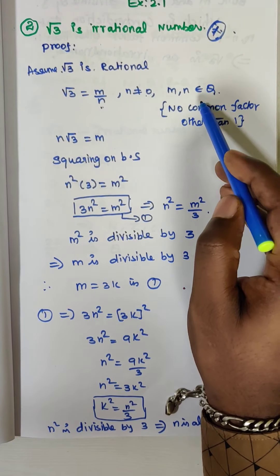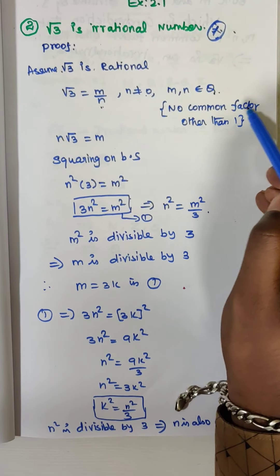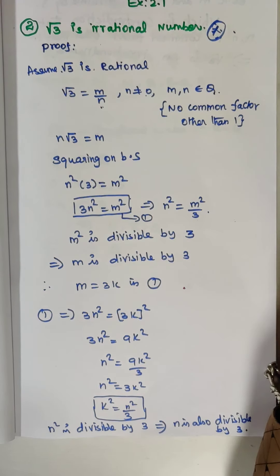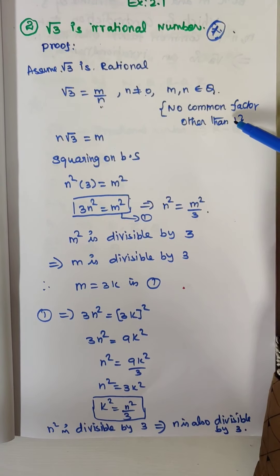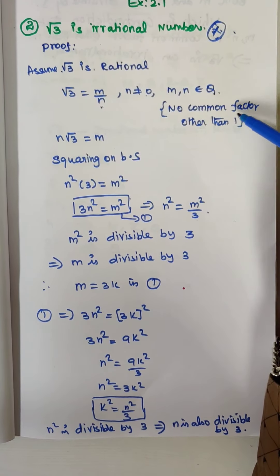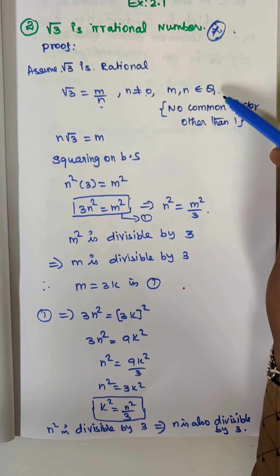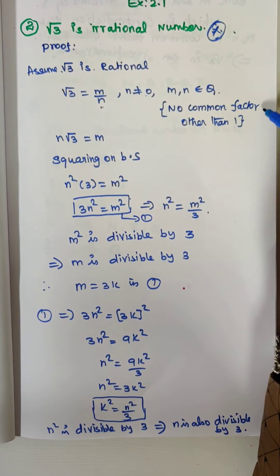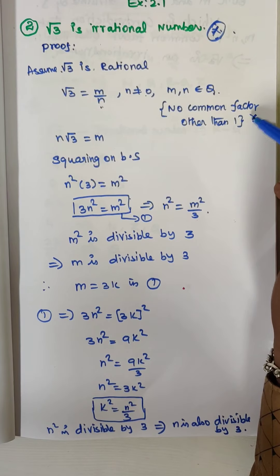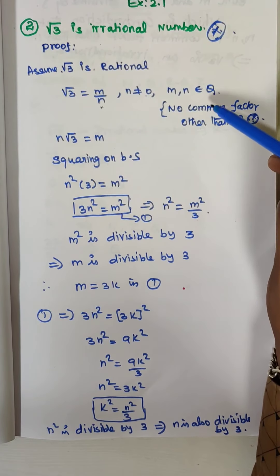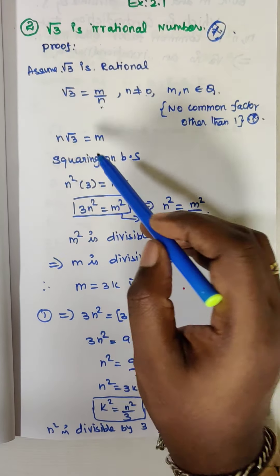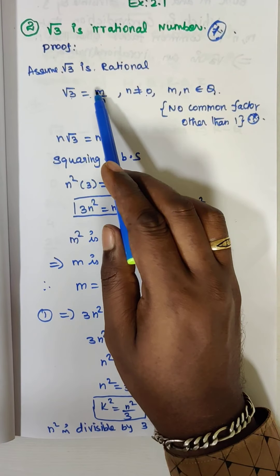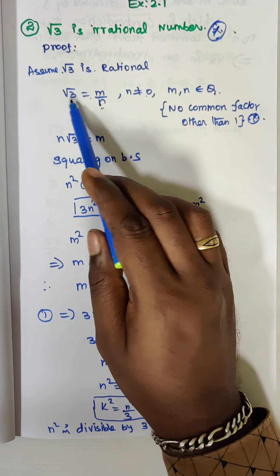Already you know a rational number has no common factor other than 1. This is the rational number condition — it's very important. So m and n have no common factor other than 1. Now, root 3 is equal to m by n, and we take cross multiplication: n root 3 is equal to m.